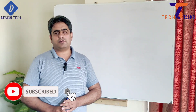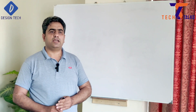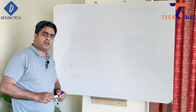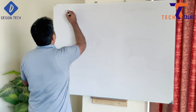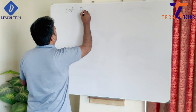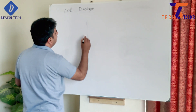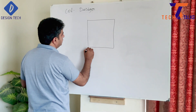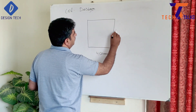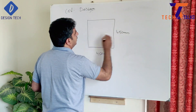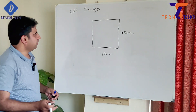Welcome to my channel Tucked Up with Shaheed. Today we will discuss column design — its minimum reinforcement and arrangement of reinforcement. We will start by drawing one column, suppose 450 mm by 450 mm. First of all, we will discuss its reinforcement requirements.